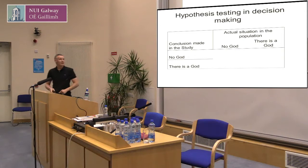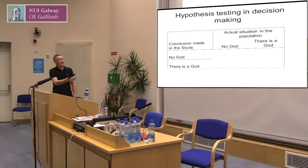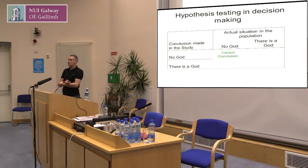The point is you're going to make a decision. Two of these decisions are correct and two of them are incorrect. So the reality — think of this as the population — there either is a God or there isn't. If we had all of that information available, what you have is your own life, and based on that limited piece, you have to make that decision. There is no God and you lived your life saying there is no God — that's the correct conclusion. There is a God and you said there's a God — that's the correct conclusion.